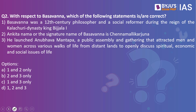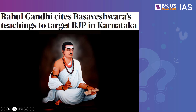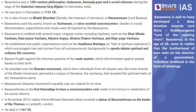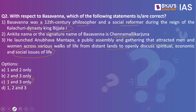Now let's look at the next practice question. With respect to Basavanna, which of the following statements are correct? (1) Basavanna was a 12th century philosopher and social reformer during the reign of Kallachuri dynasty king Bijala. (2) The Ankita Nama or signature name of Basavanna is Chenna Mallikarjuna. (3) He launched Anubhava Mantapa, a public assembly attracting men and women across various walks of life to openly discuss spiritual, economic, and social issues. The answer is 1 and 3 only. The first statement is correct.